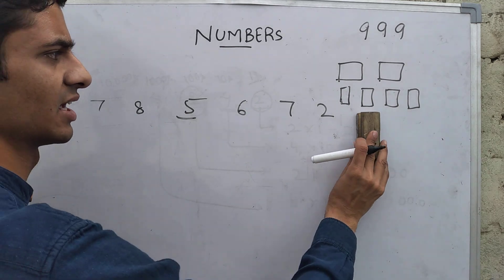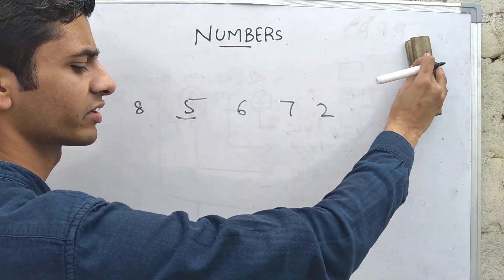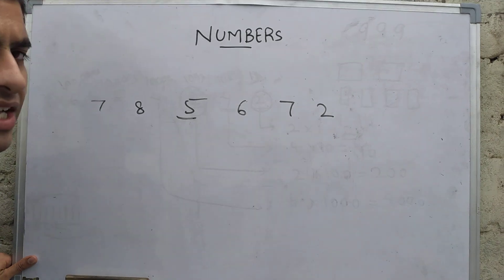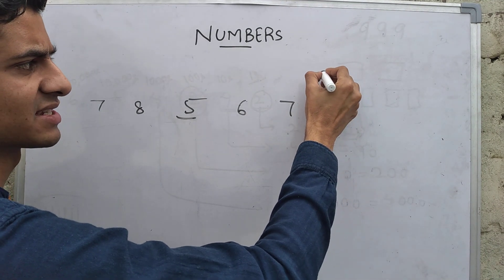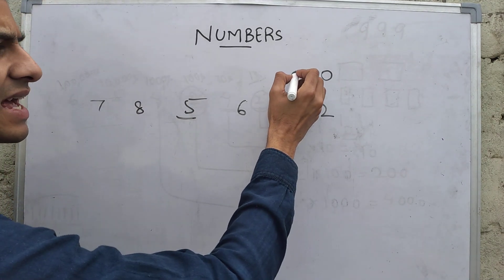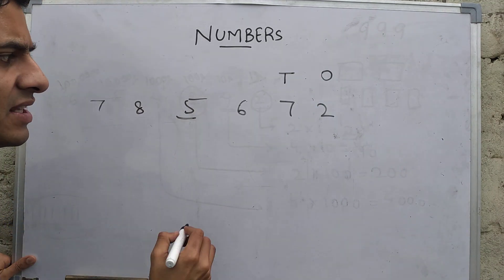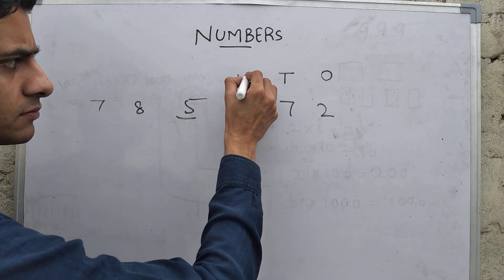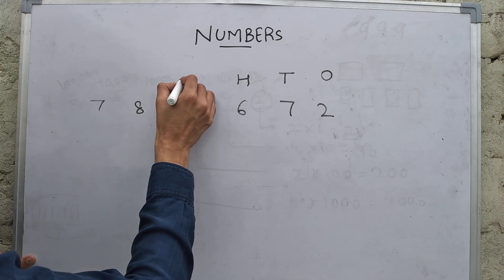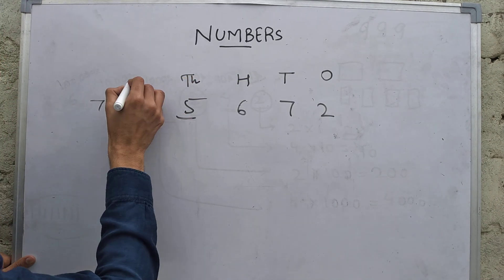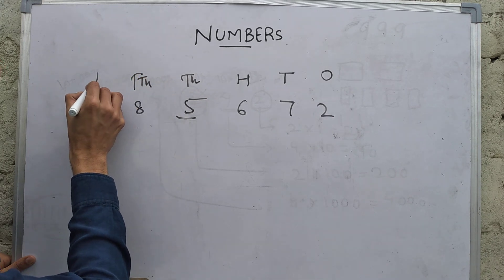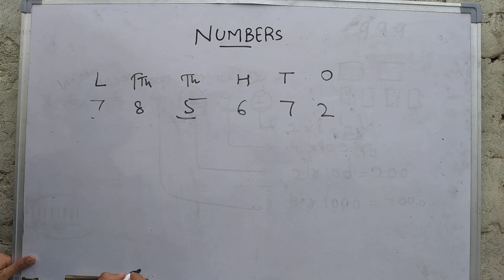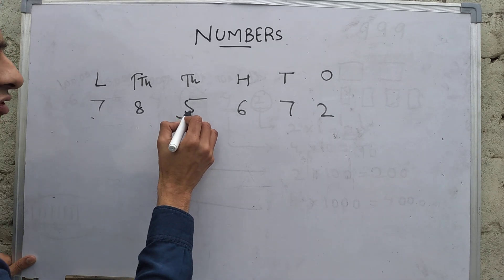You will have to see here, okay, then you can say. But if you have written it in a place value chart, this two is at ones place. For ones place I am writing this O. This seven is at tens place, six at hundreds place, five at thousands place, eight at ten thousands place, and seven at lakhs place.